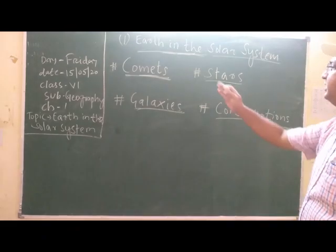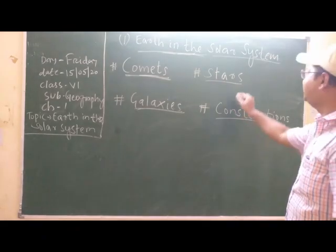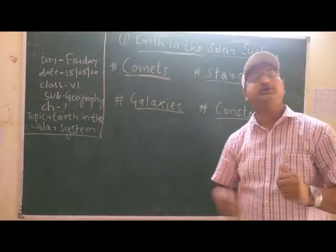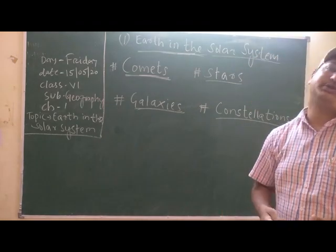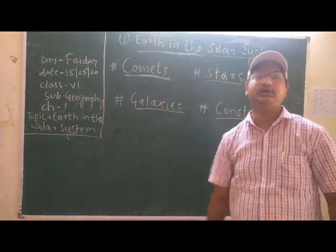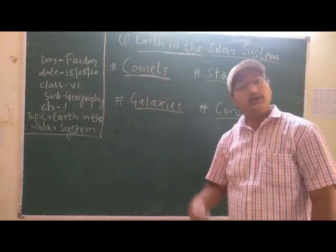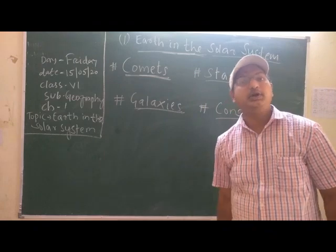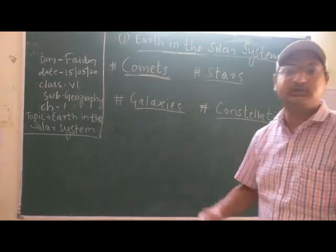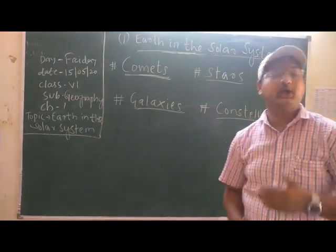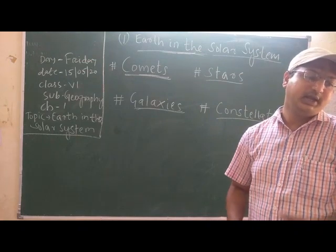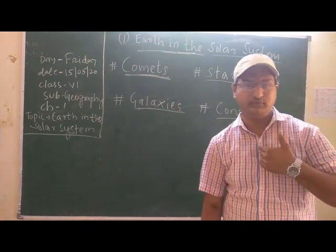After comets, we will study about stars. What are stars? Thousands — not just thousands — millions and millions of stars can be seen in the night sky. They are the heavenly bodies, the celestial bodies, who have heat and light of their own.